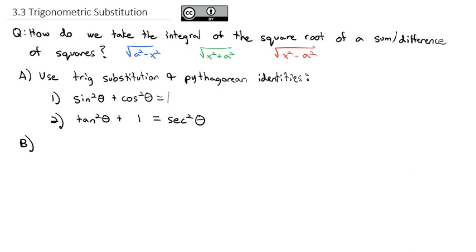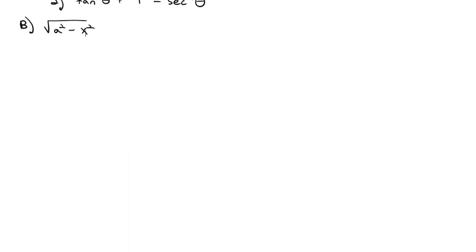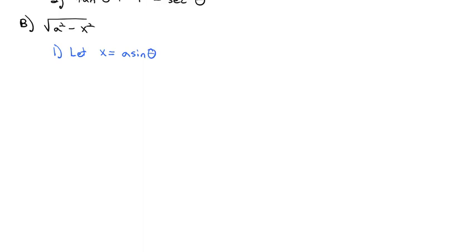These properties will help us simplify down to integrals that are much easier to work with. Let's look at the three cases with square roots of sums and differences. Starting with the case where we have the square root of a squared minus x squared, we will let x equal a times sine of theta.